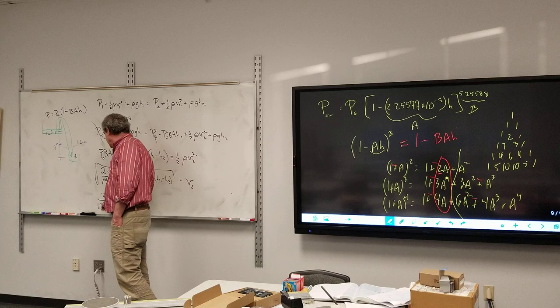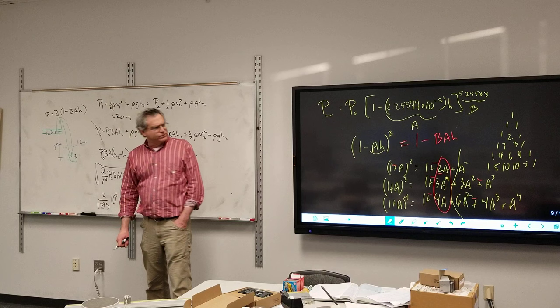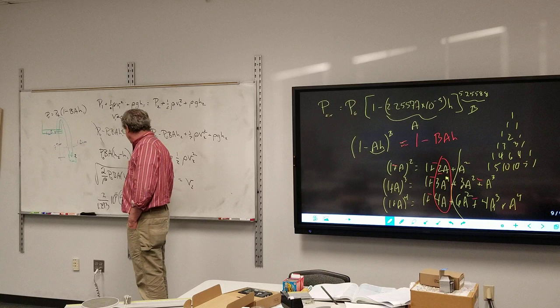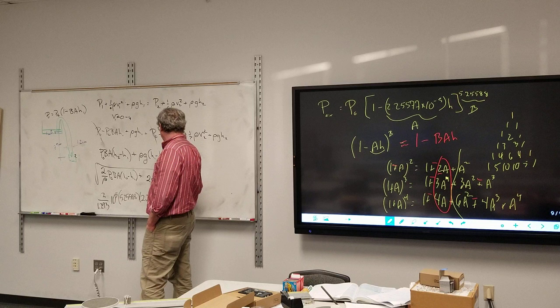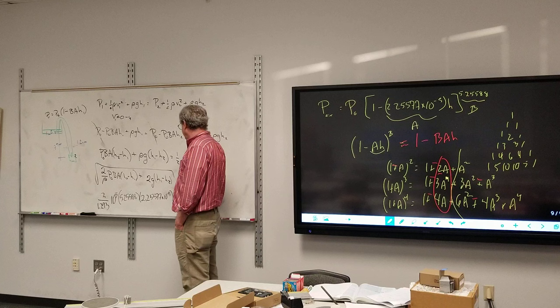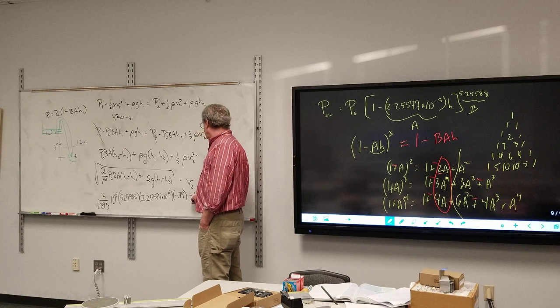I have 2 over the density of air, I'm assuming that is 1.293, atmospheric pressure 10 to the fifth, b is 5.25588, a is 2.25577 times 10 to the negative fifth, h2 minus h1 is negative 0.79, plus 2 times 9.8 times (h1 minus h2) which is 0.79, and then square root of that whole thing.